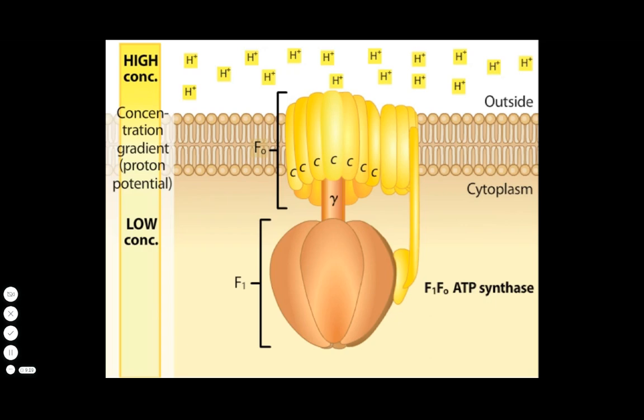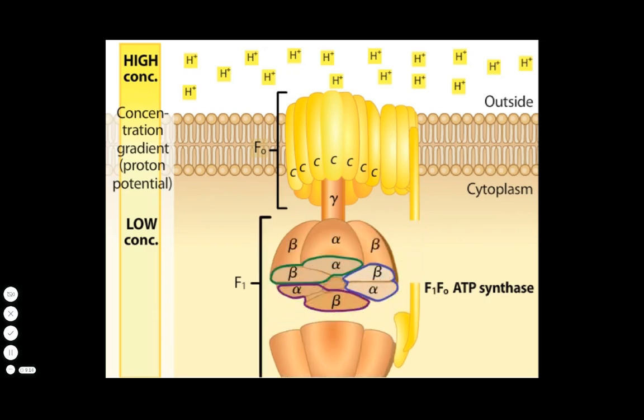Surrounding the gamma subunit in F1 are three pairs of alpha and beta subunits, which serve as the sites of ATP synthesis.